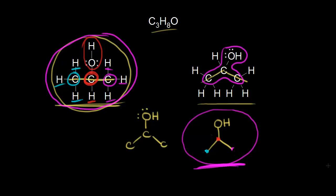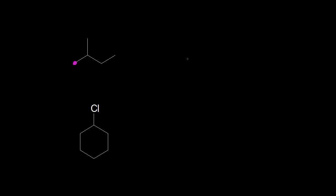So let's do several examples of understanding bond line structures and the information that they contain. Let's start by analyzing this bond line structure, beginning with this carbon in magenta. That carbon in magenta is bonded to another carbon in light blue. Then there's another carbon in red, and a bond between those two carbons. Then a carbon in green, and finally one more carbon in dark blue. So we have five carbons in this molecule — so C5.